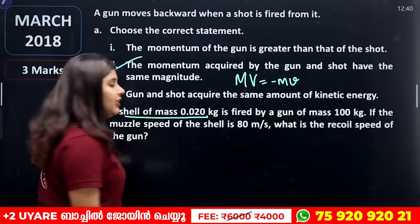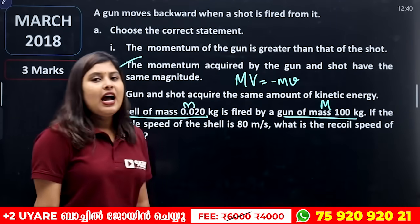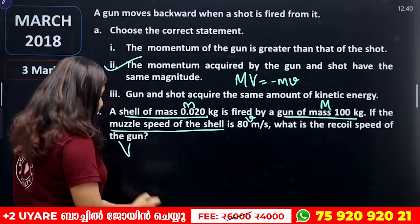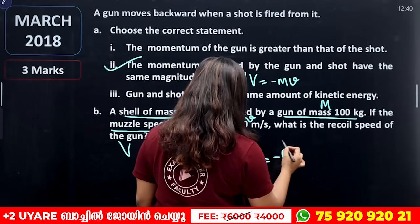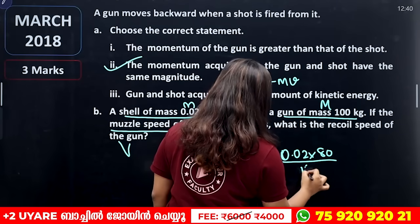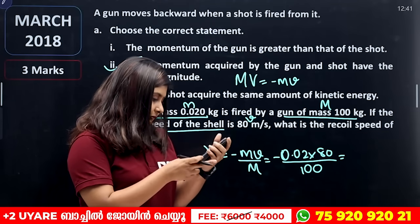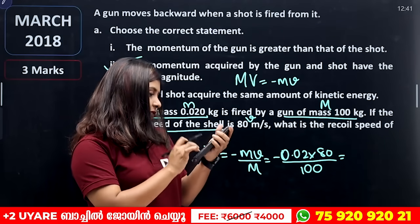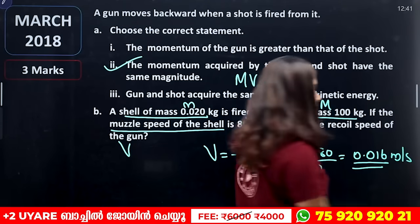A shell of mass small m is 0.02 kg is fired by a gun of mass capital M 100 kg. The muzzle speed of the shell, small v, is 80 m/s. Using the recoil equation: V equals minus 0.02 into 80 divided by 100, which gives 0.02 into 80 equals 1.6, divided by 100 gives 0.016 meter per second.